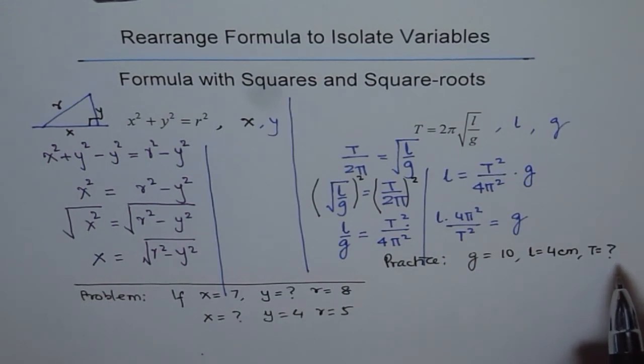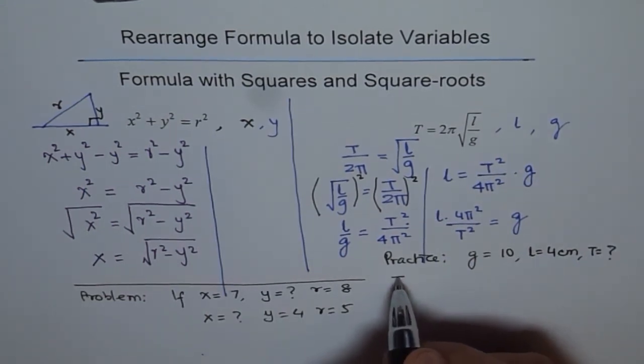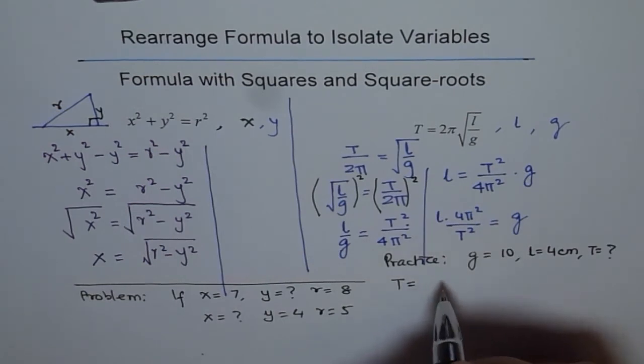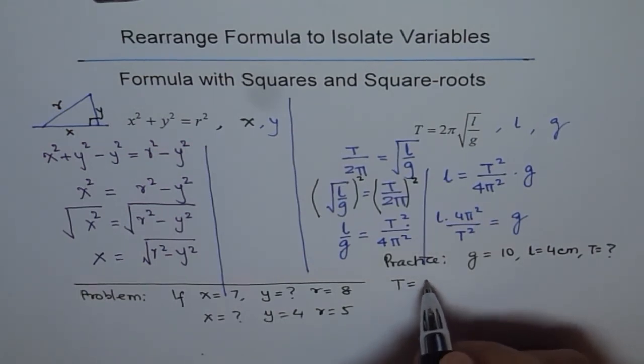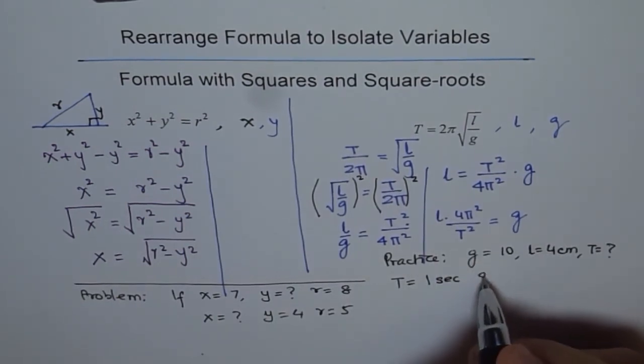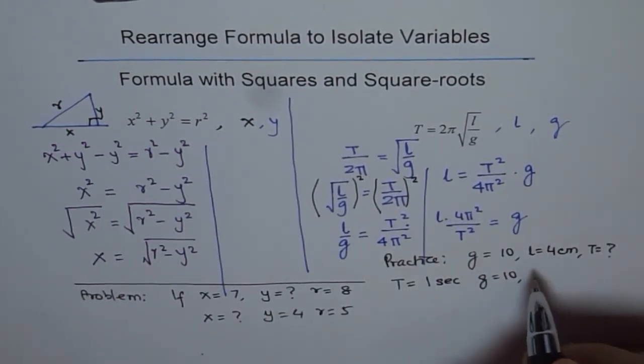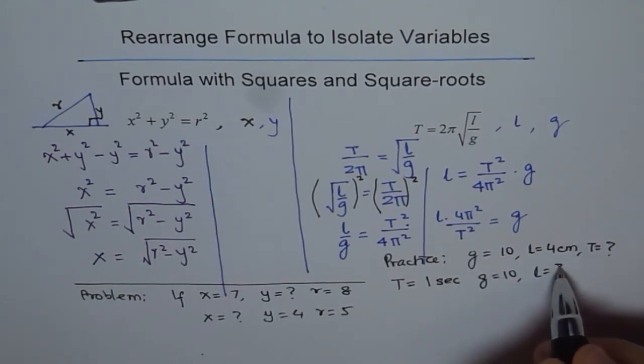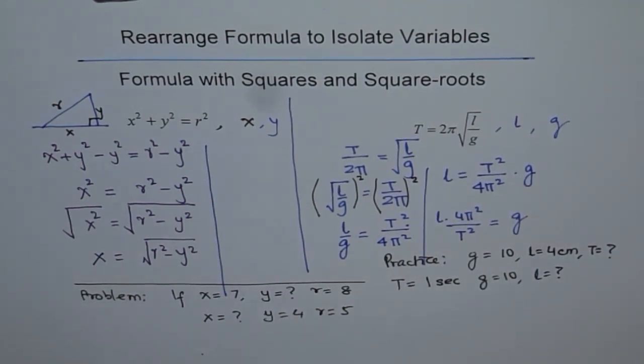So, you can do that or you can do like this. Let us say t is known to you. So, we say let T equals to time taken is, so let's say 1 second, 1 second and g is 10 is a constant and l you need to figure out. So, try to find what l is. So, try to use these values and find your answer as a practice. Thank you.